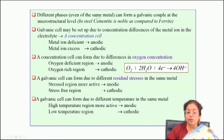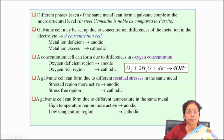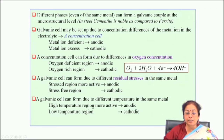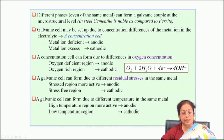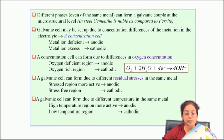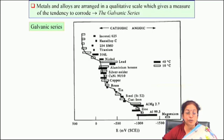A galvanic cell may form because of a difference in residual stress — the stressed region acts as anode compared to the stress-free region. A galvanic cell may also form due to difference in temperature within the same metal: the high-temperature region usually acts as anode compared to the low-temperature region. If you take a component with different temperatures in different regions, those different temperature regions corrode to very different extents.